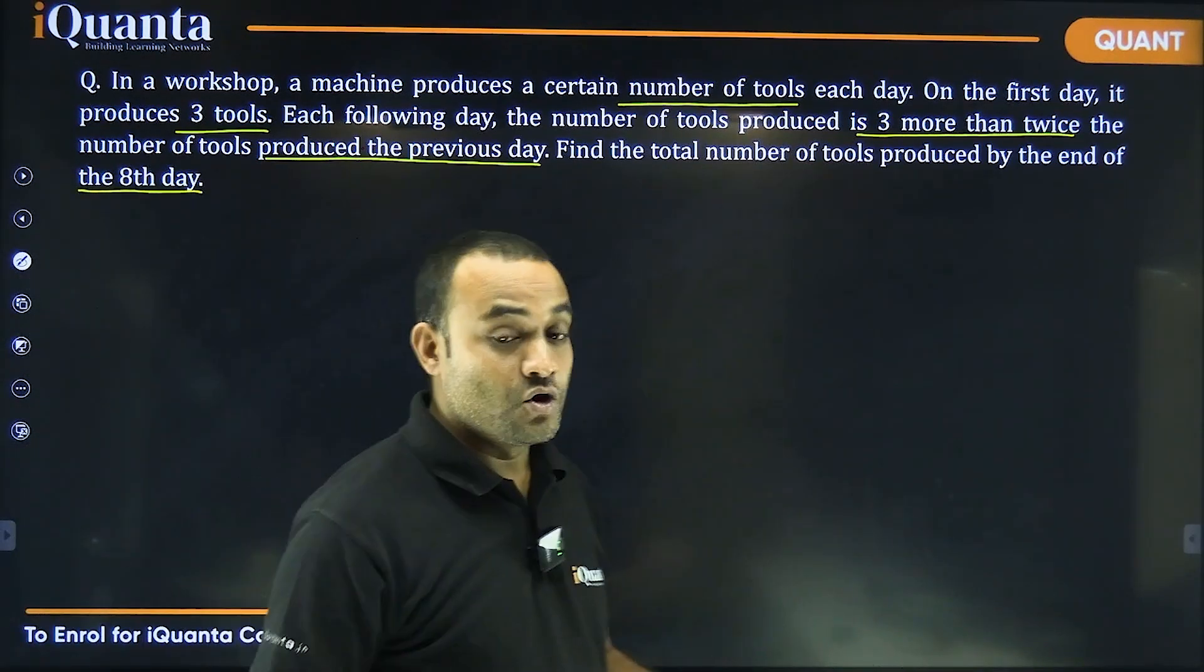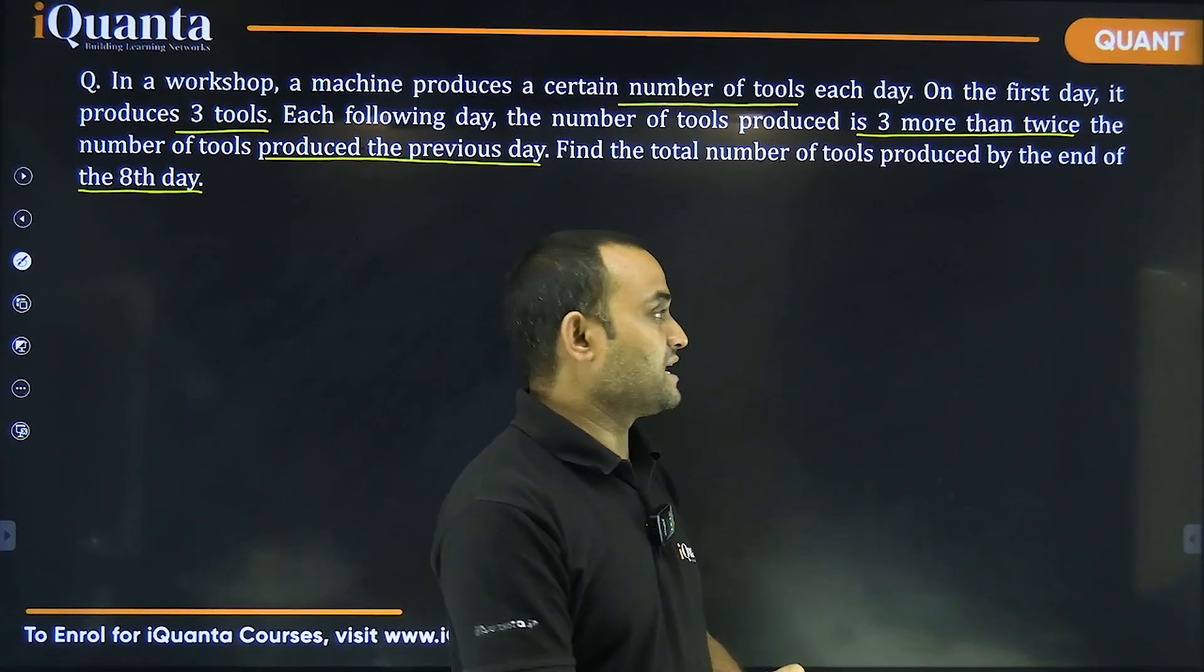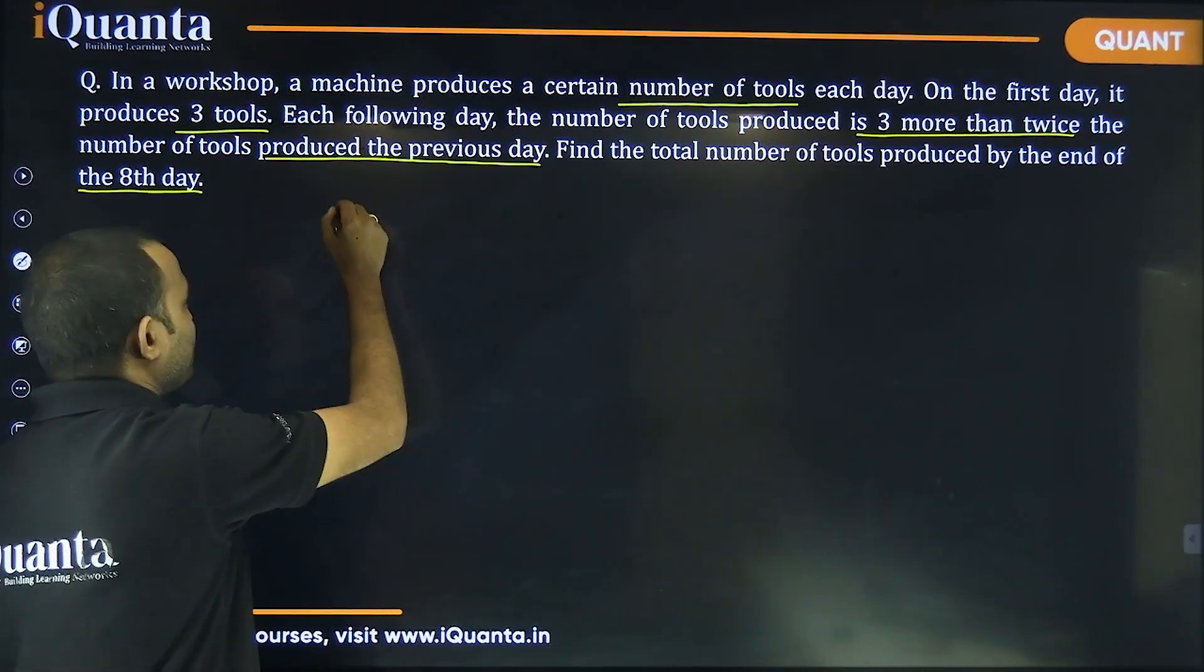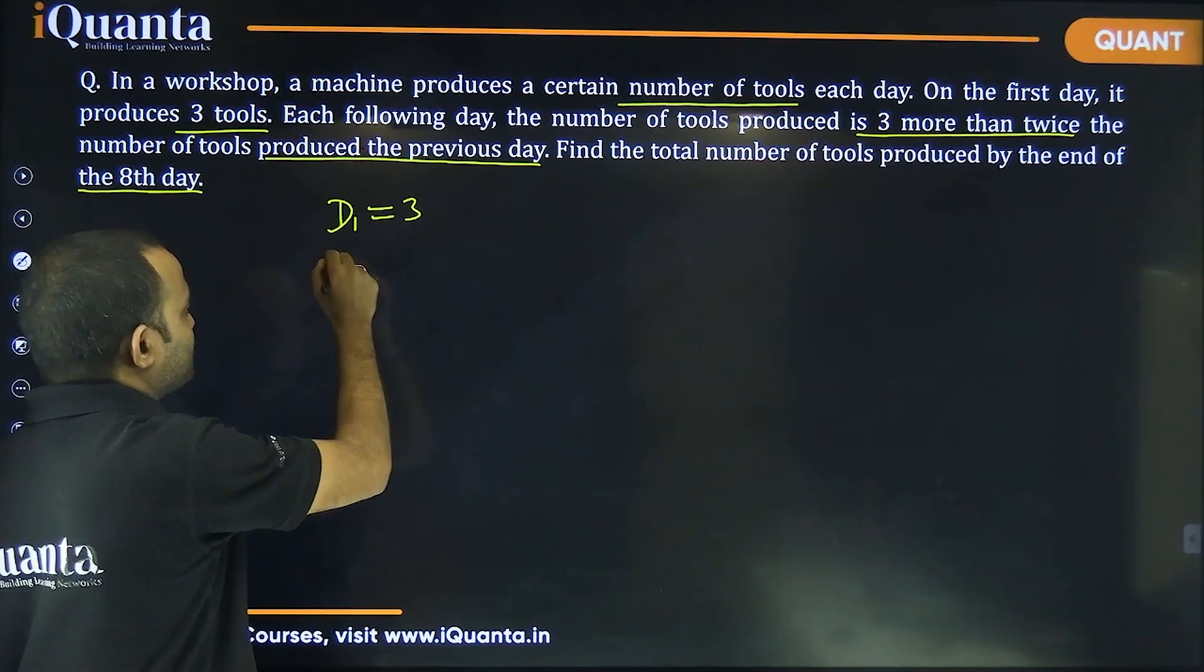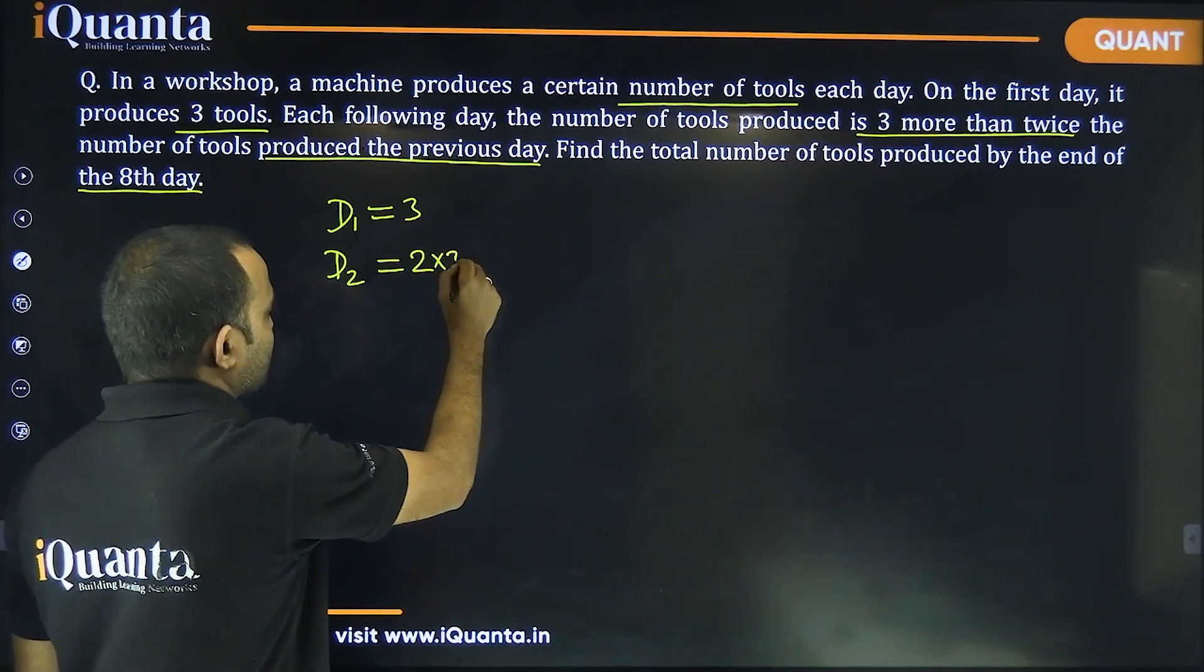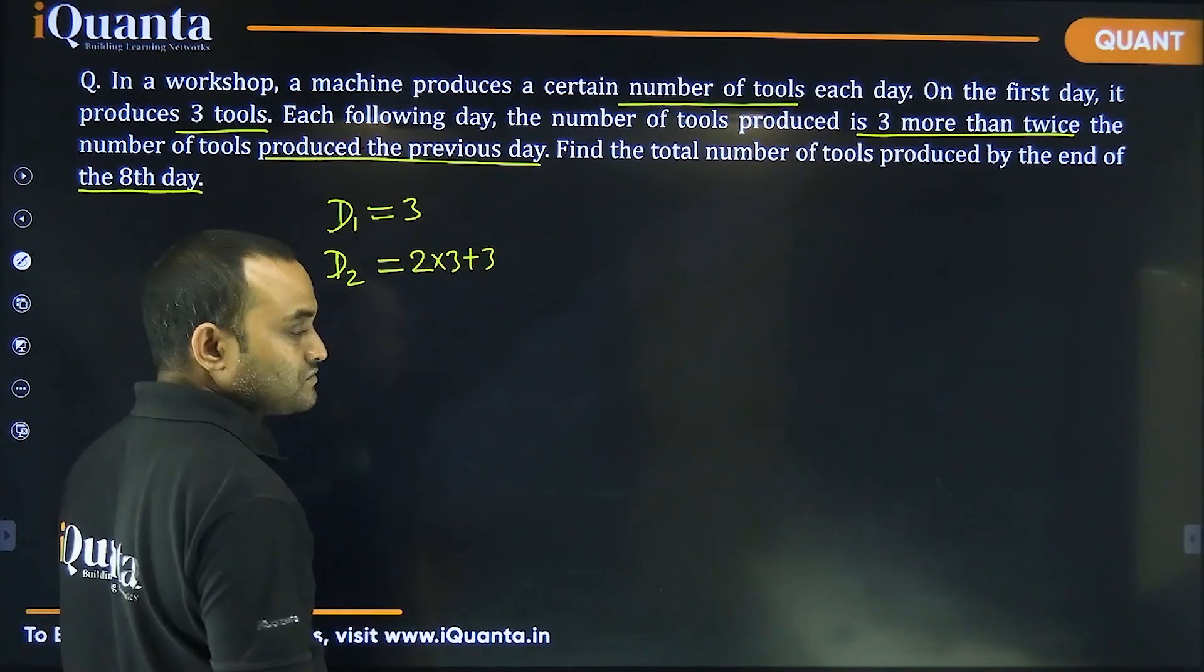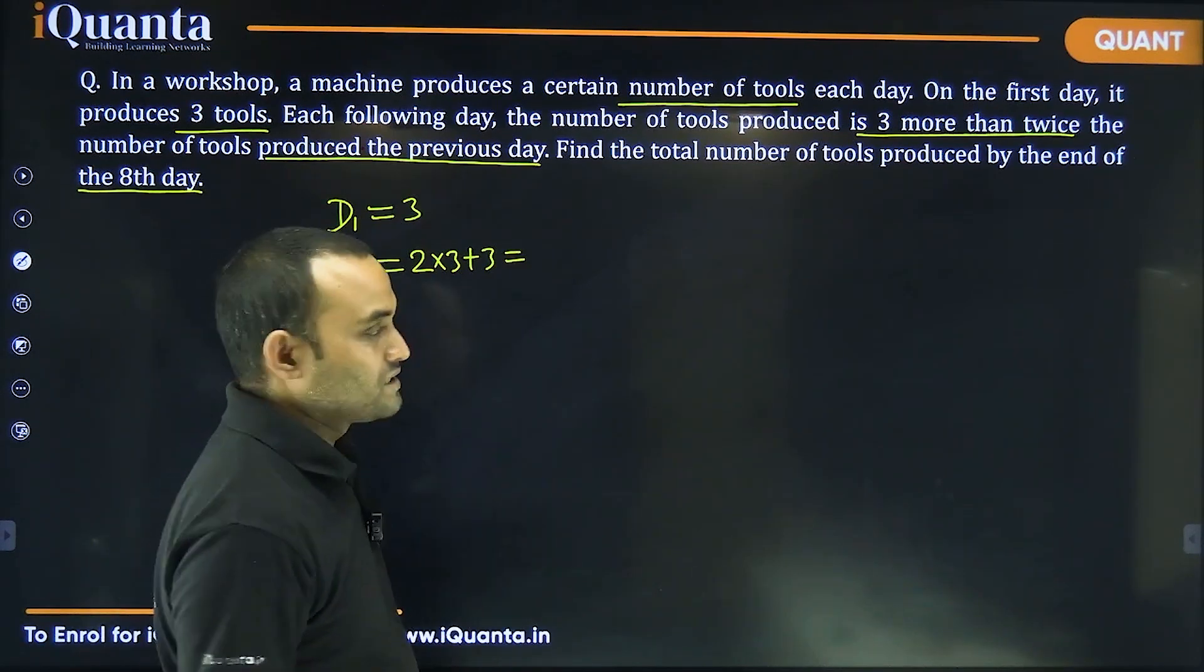So, we need to find total number of tools produced in first eight days, right? What we can say, on day one, number of tools produced is equal to three. Day two, number of tools produced is twice of the previous day plus three, which is equal to six plus three, that is nine.